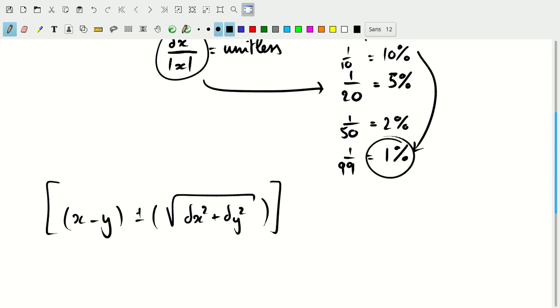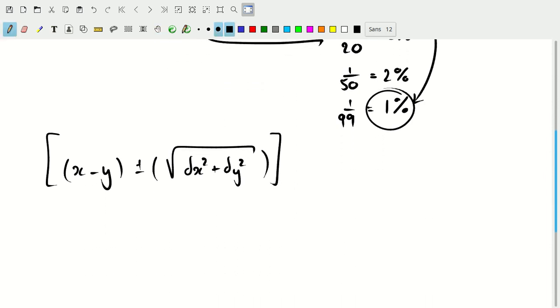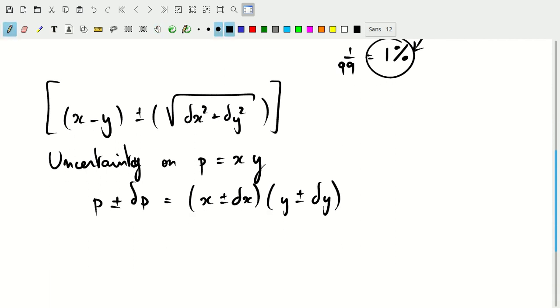Now we'll talk about the uncertainty on a product of numbers. The uncertainty on the product p equals x times y. We can write this as the product plus or minus dp, with the uncertainty, so that will be x plus or minus dx times y plus or minus dy.